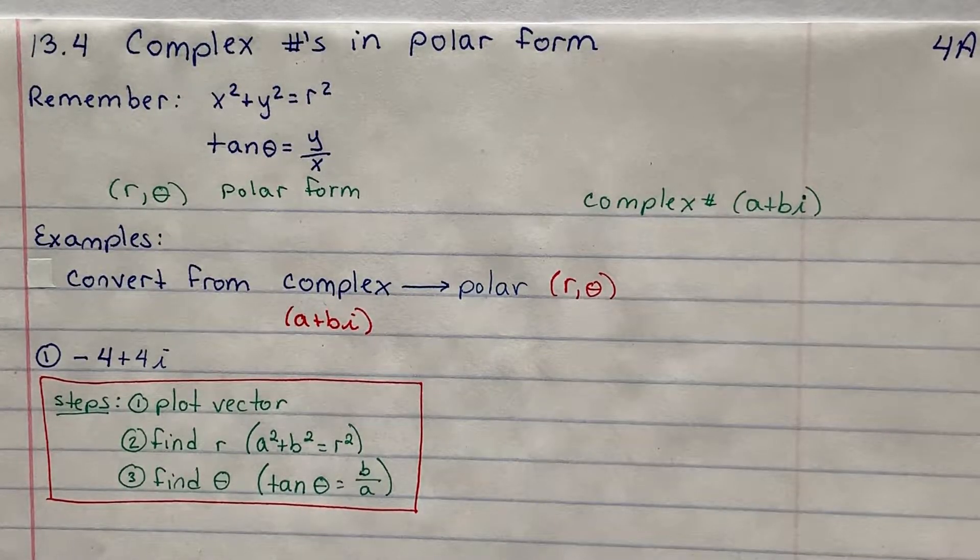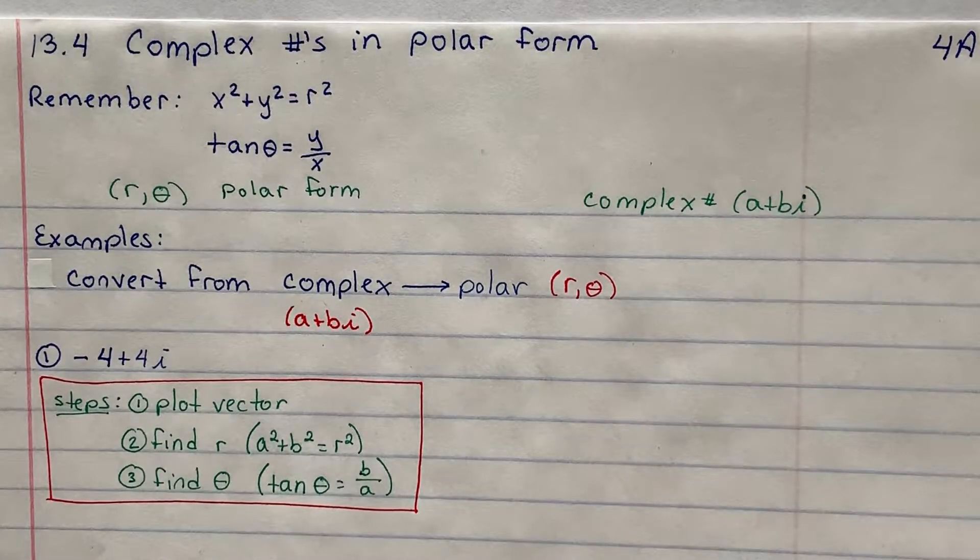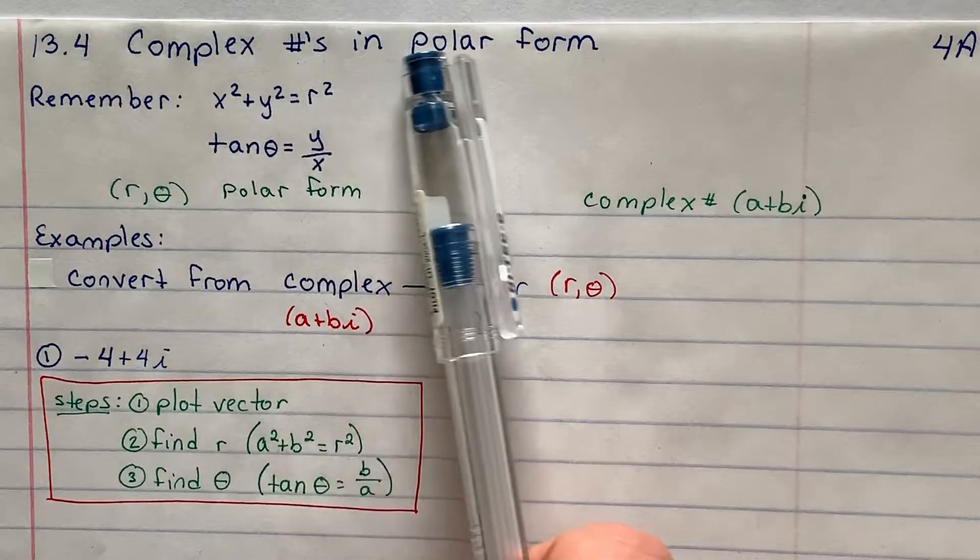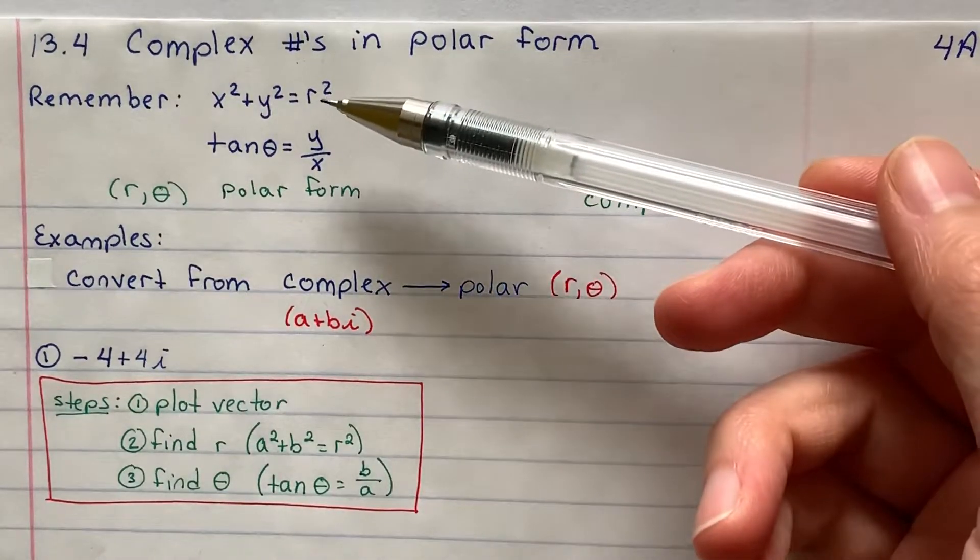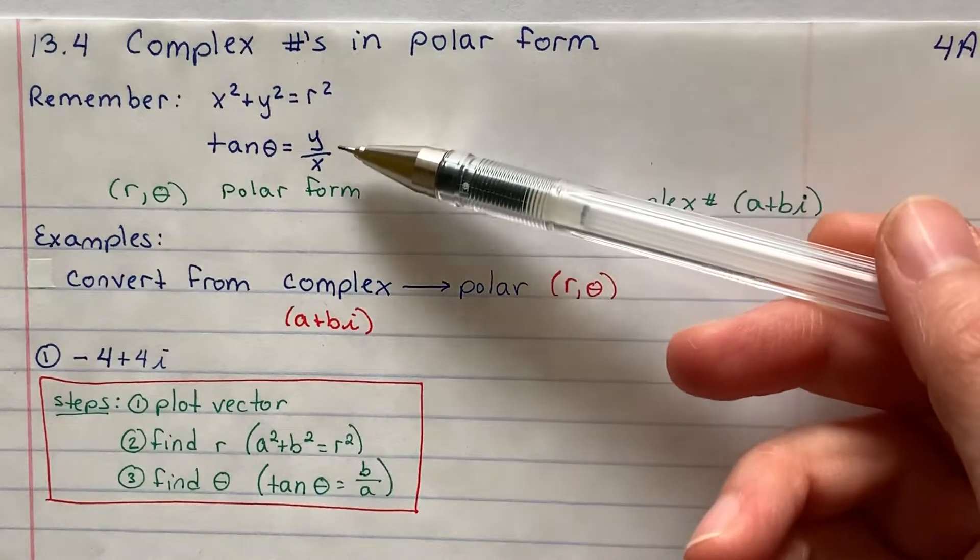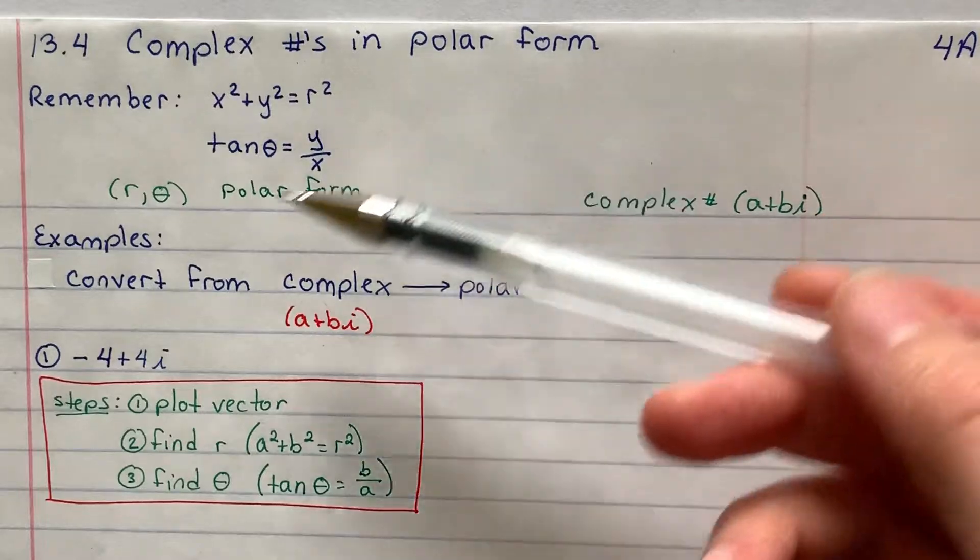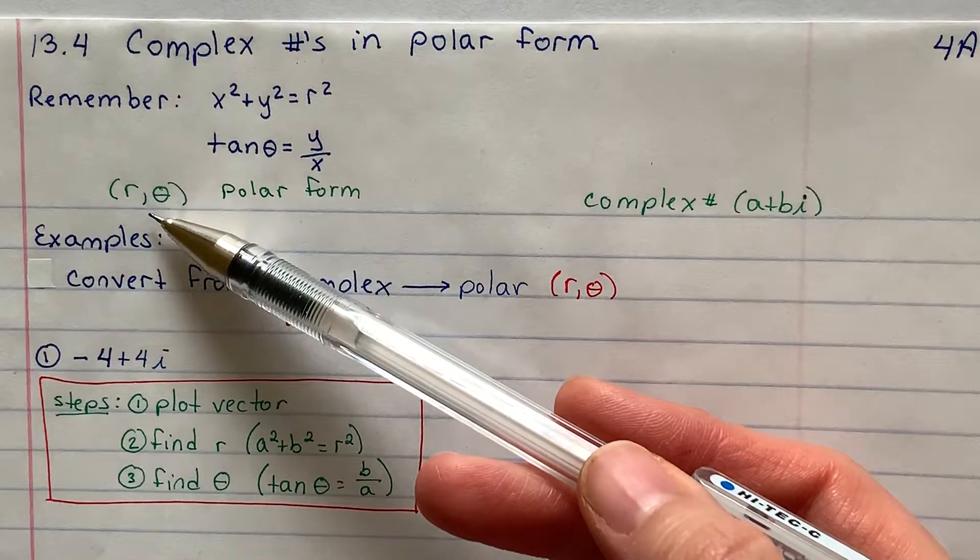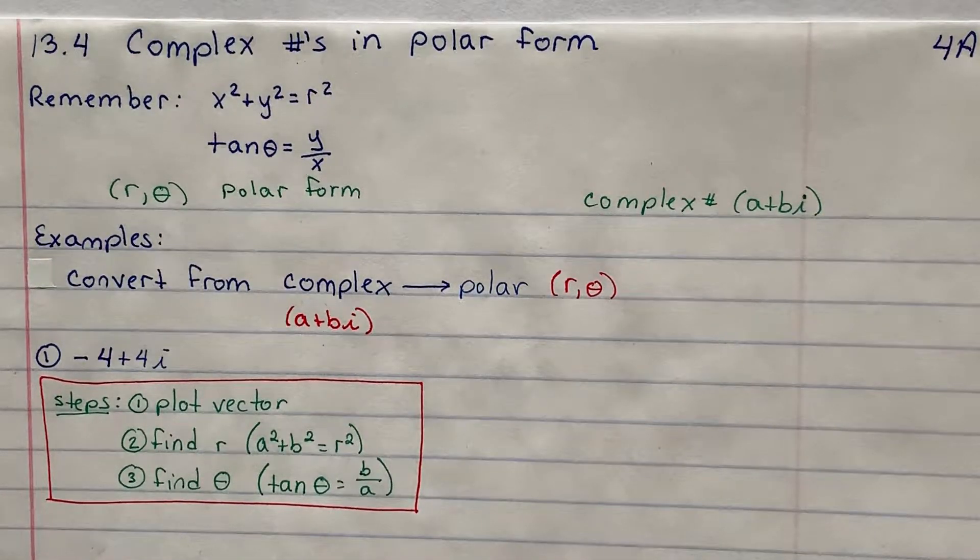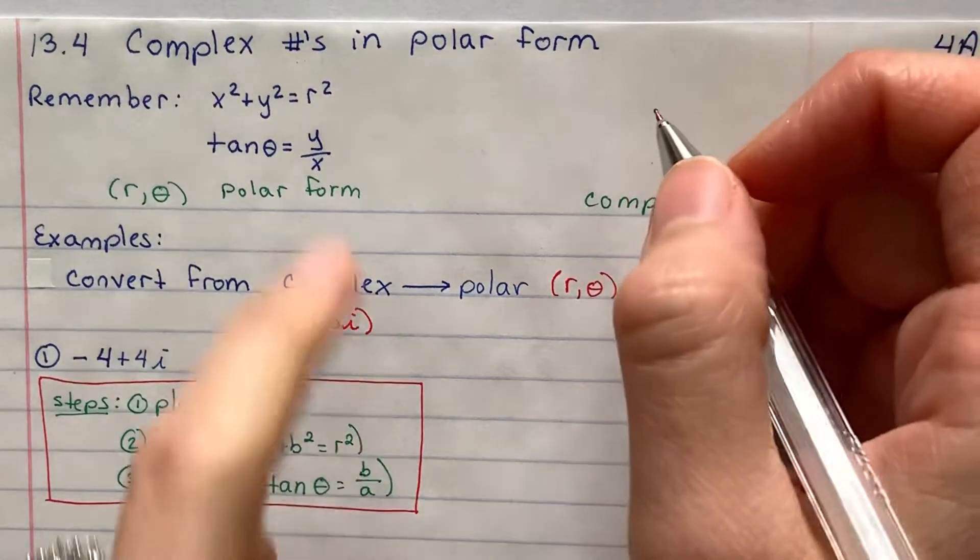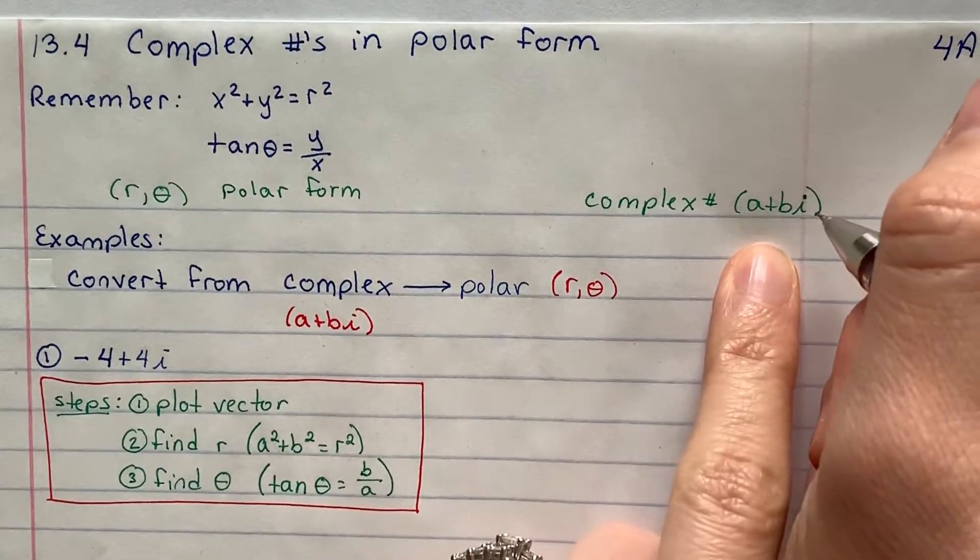So here are my notes to start off, and if you feel like you need to pause it to copy this down, please do so. We've got 13.4 complex numbers in polar form. Some things to remember, x squared plus y squared is equal to r squared, tan theta is equal to y over x. In polar form, you have the coordinate r comma theta. In complex form, I'm going to fill this in right here.